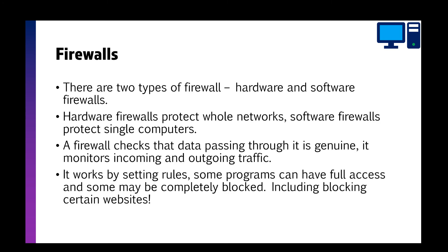There are two types of firewalls: hardware firewalls and software firewalls. A hardware firewall protects the whole network and is usually built into your router, while a software firewall protects a single computer and is something you install yourself. A firewall checks data passing through, looks at port numbers, and verifies it's legitimate. It monitors incoming and outgoing traffic and you can set rules — some programs can have full network access, some can be completely blocked, and you can also block certain websites such as those full of viruses or distracting sites like social media.